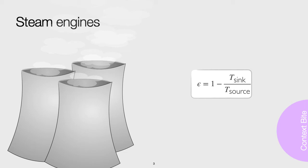Consequently, the efficiency of an engine can only be perfect if either the temperature of the sink is zero or the temperature of the source is infinite.